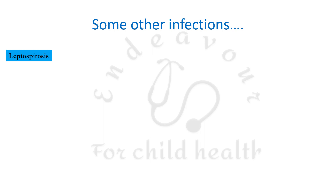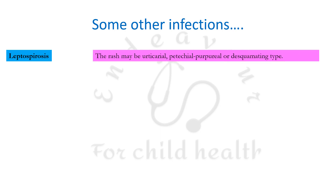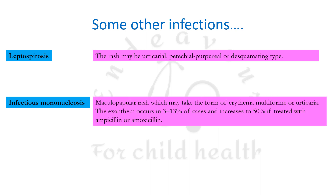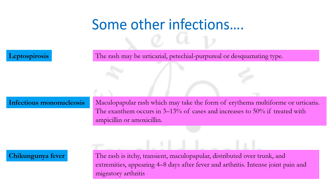In leptospirosis, the rash may be urticarial, petechiopurpural, or desquamating type. In infectious mononucleosis, there is a maculopapular rash which may take the form of erythema multiforme or urticaria. The exanthem occurs in 3–13% of cases and increases to 50% if treated with ampicillin or amoxicillin. In Chikungunya fever, the rash is itchy, transient, and maculopapular, distributed over trunk and extremities, appearing 4–8 days after fever onset. Chikungunya is recognized by intense joint pain and migratory polyarthritis.